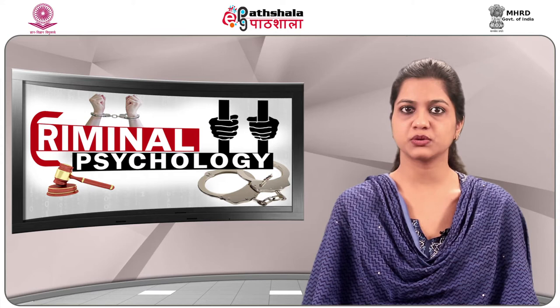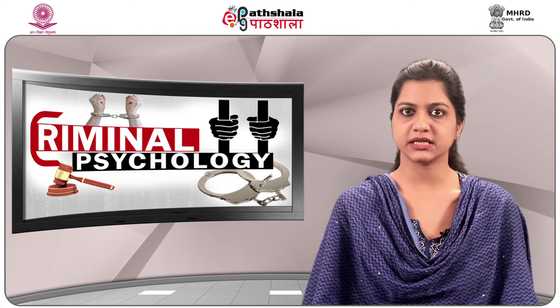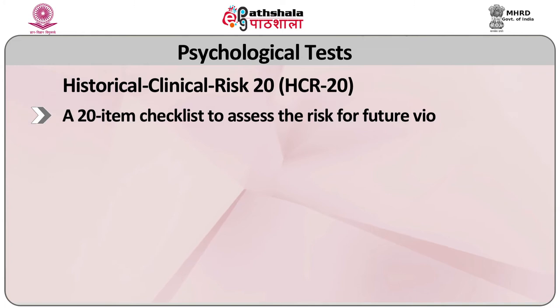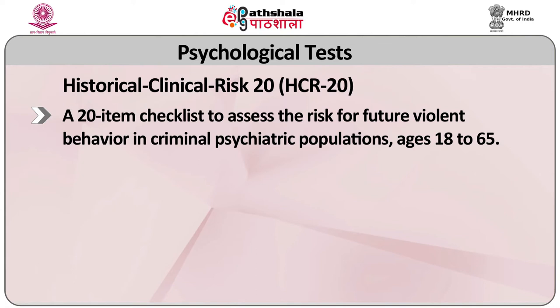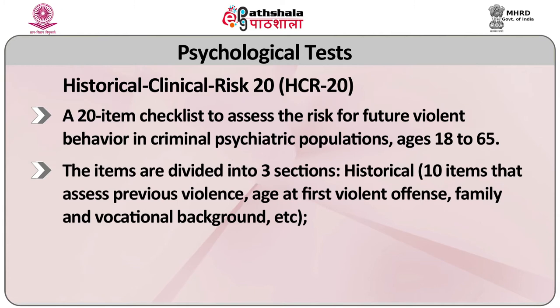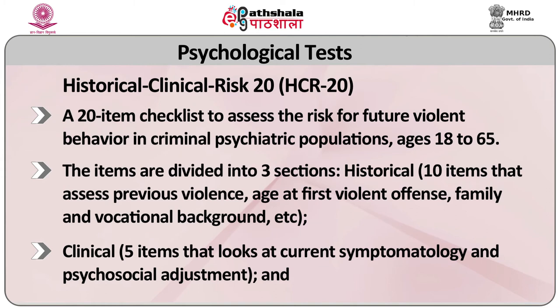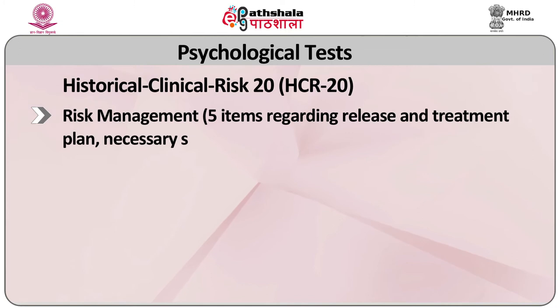HCR-20 (Historical Clinical Risk-20) is a 20-item checklist to assess the risk for future violent behaviour in criminal psychiatric populations aged 18 to 65. The items are divided into 3 sections: Historical — 10 items that assess previous violence, age at first violent offence, family and vocational background, etc.; Clinical — 5 items that look at current symptoms and psychological adjustments; and Risk Management — 5 items regarding release and treatment plans, necessary services and support, etc.